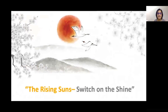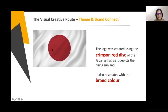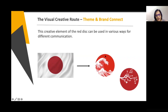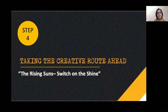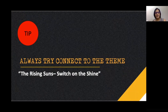We cracked the visual theme using the crimson disc of the Japanese flag as the main visual element, based on which all other visual elements and collaterals would be created. We used this because it depicted Japan as the land of the rising sun. The crimson disc was used to create different elements — invitations, collaterals, branding — all connected back to the central theme: The Rising Sun, Switch on the Shine.